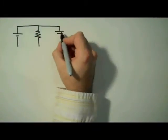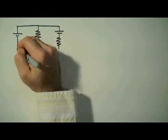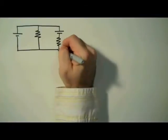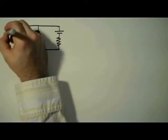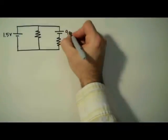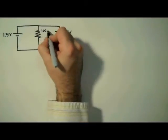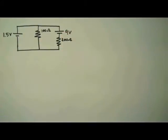Specifically, we're going to determine the current through, the voltage across, and the power dissipated by the two resistors that you see here.